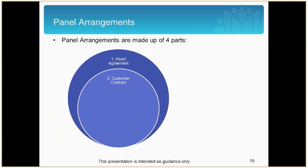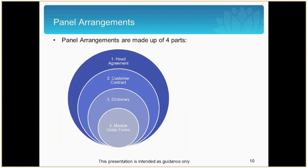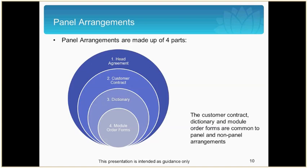In ProcureIT, the head agreement must be cross-referenced in item 7 of the general order form. Part 3 of the framework is the dictionary, which outlines the defined terms that the contracting agency and contractor need to be aware of. The last component is the modules and module order forms. There are 13 of these to select under the ProcureIT framework. The modules to be completed are dependent on the products or services required — for example, hardware and software both have separate module order forms.